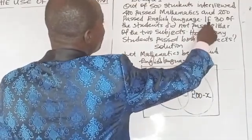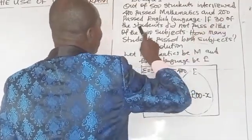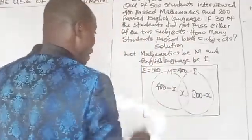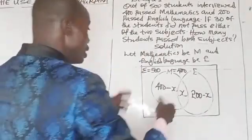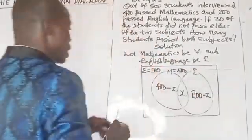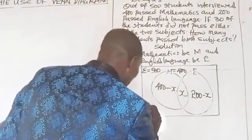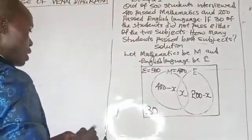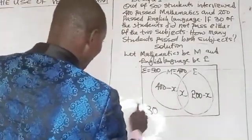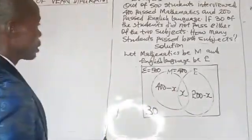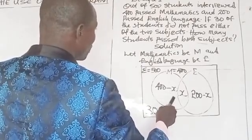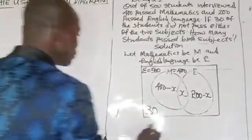If 30 of the students did not pass either of the two subjects, that 30 is placed outside both circles. Now, to find how many passed both subjects, we find the value of X. We sum up everything in the diagram and equate it to 500.